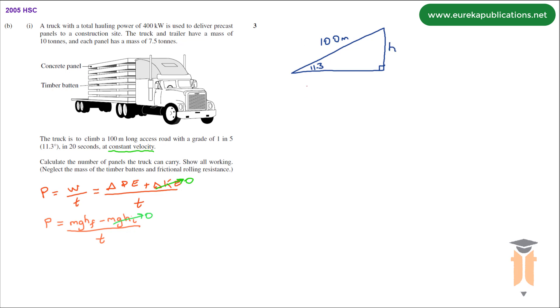Using trig in this case we've got opposite and hypotenuse so sine 11.3 equals H over 100. So H equals 100 sine 11.3. Put that into your calculator and you get H equals 19.59 meters.